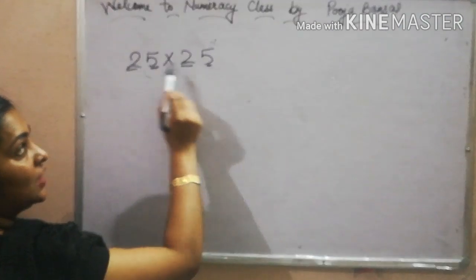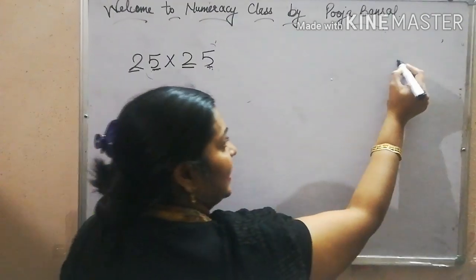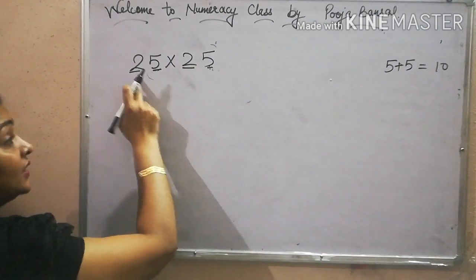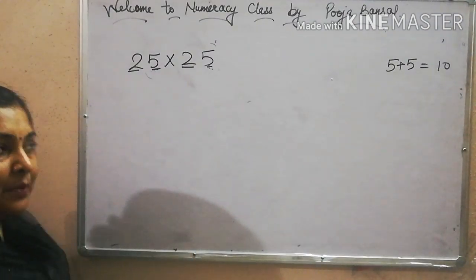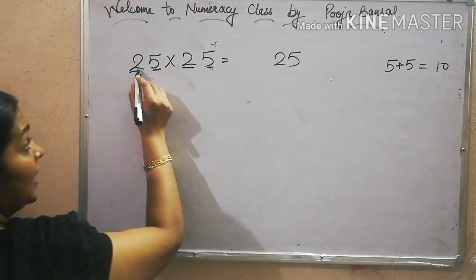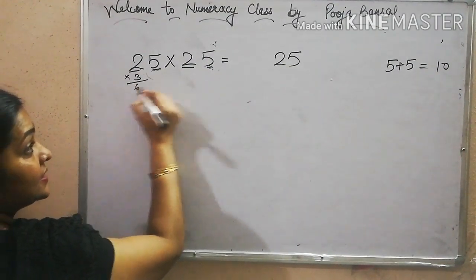Because sum of the ones digit is 10. 5 plus 5, 10. And other digits are same. That's why we get 5 fives are 25, and 2 threes are 6.